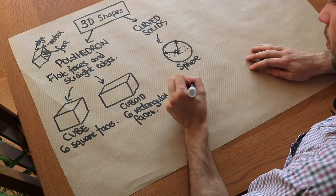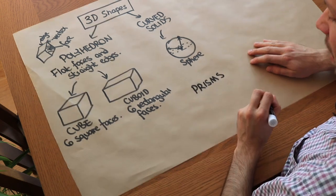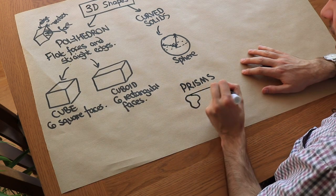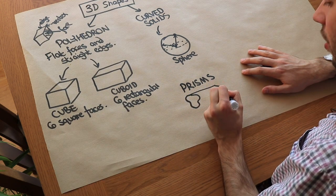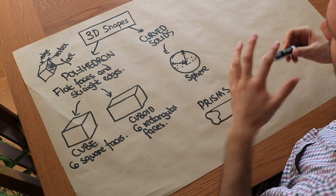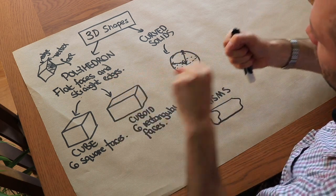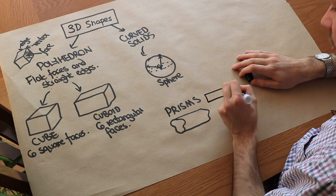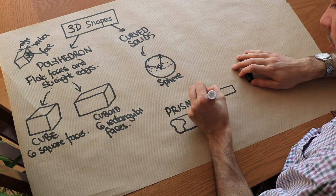So we've got prisms. And basically a prism is when we have some generic 2D shape and we extend it into 3D. So you may have seen for example play-doh, and you can sort of force the play-doh through some particular holes.